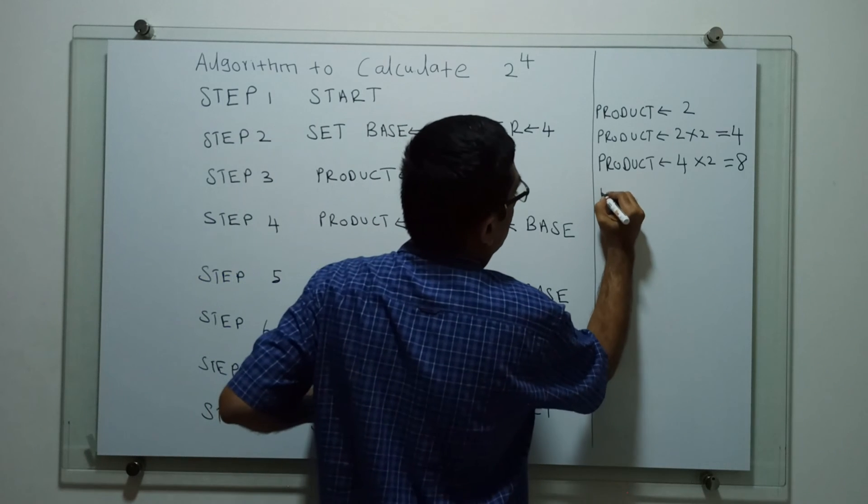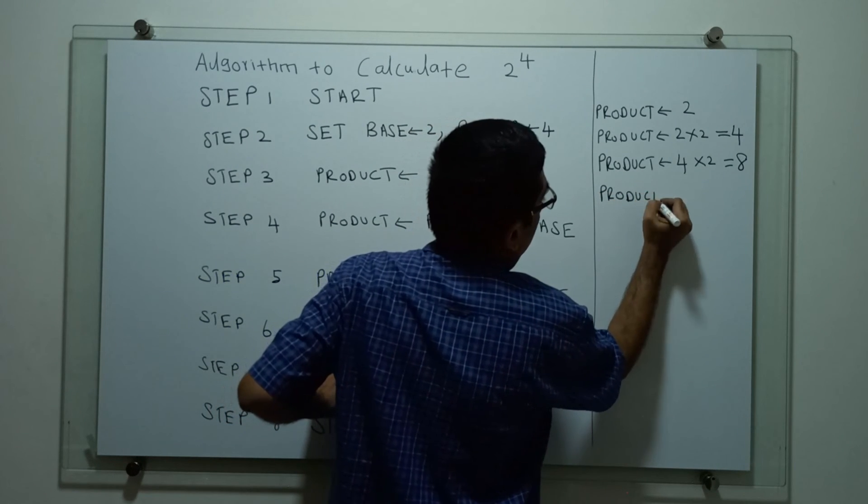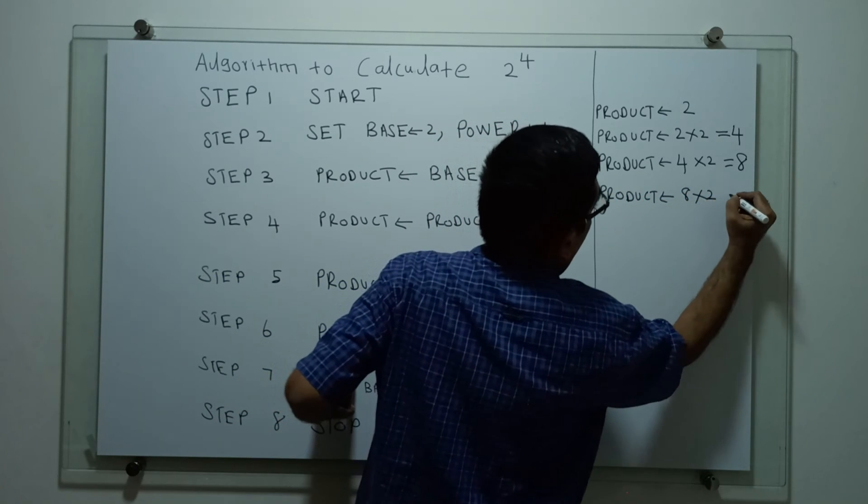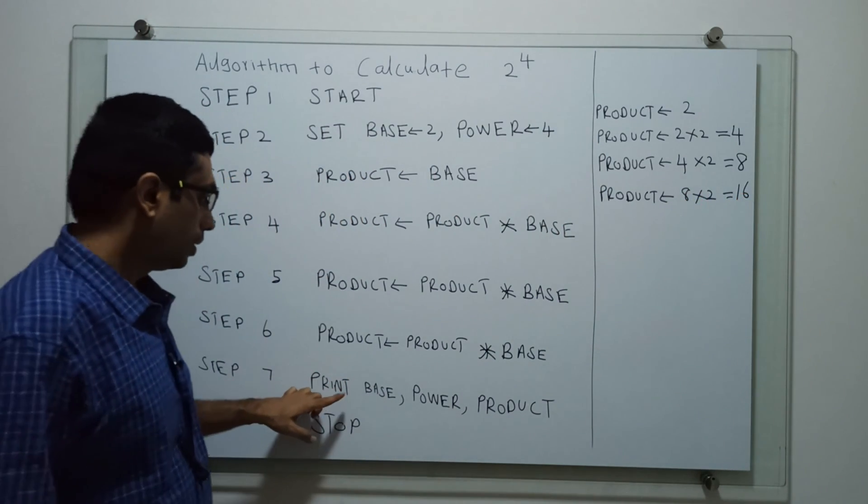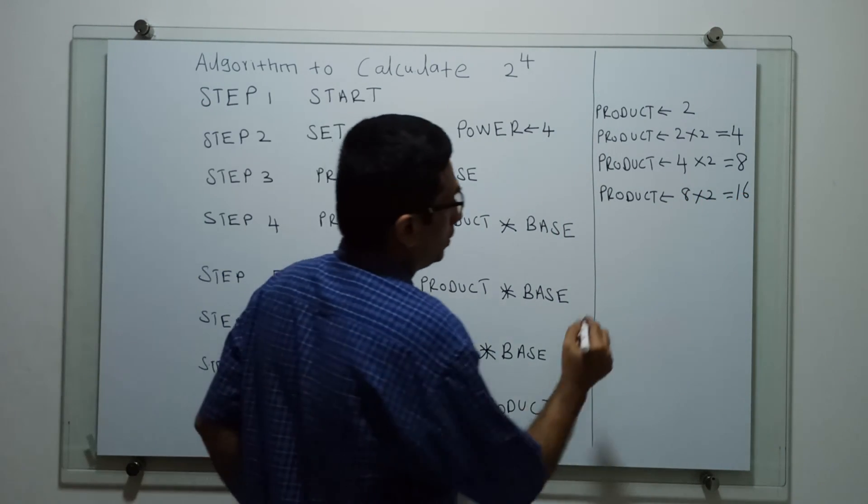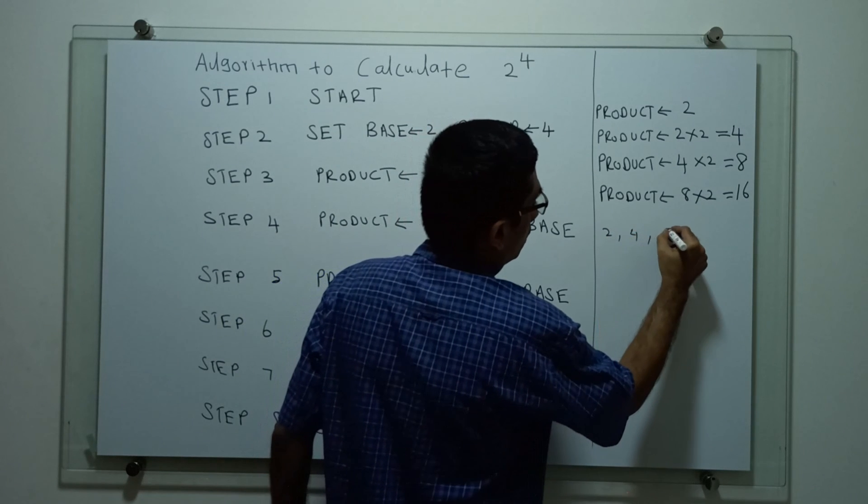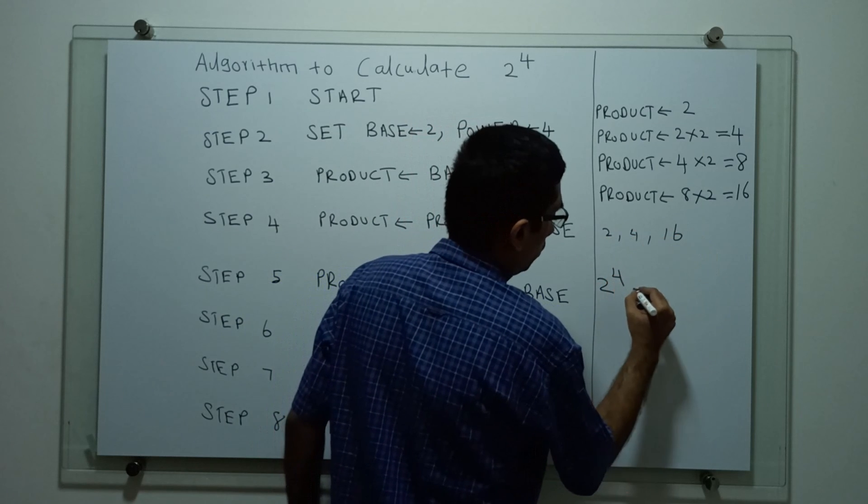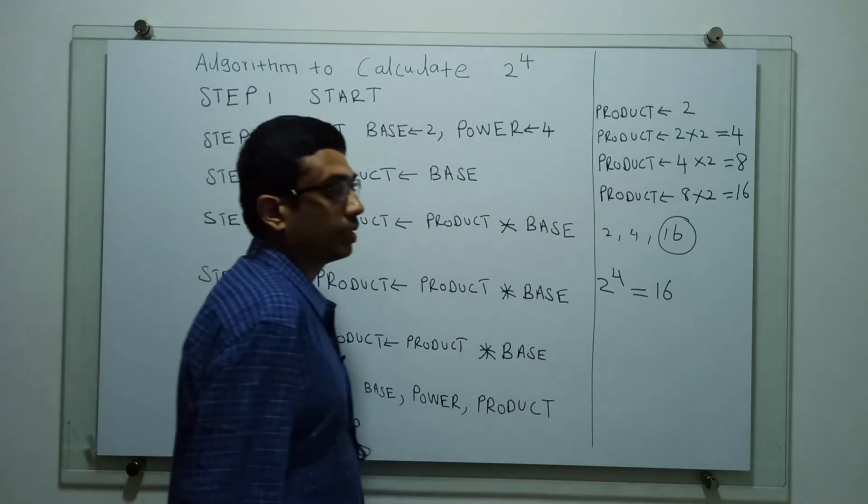Step 6, product equal to 8 into 2 which is equal to 16. So next I am printing base value is 2, power 4, product equal to 16. That means 2 power 4 equal to 16. So our result is 16.